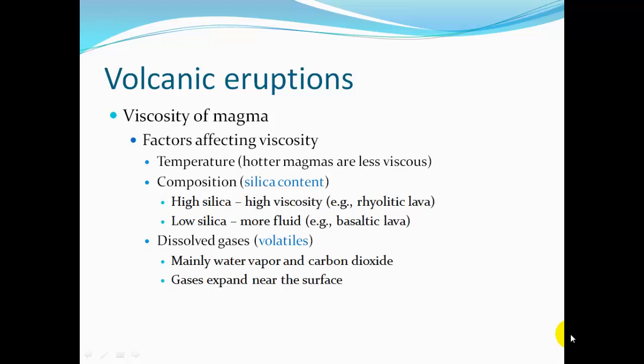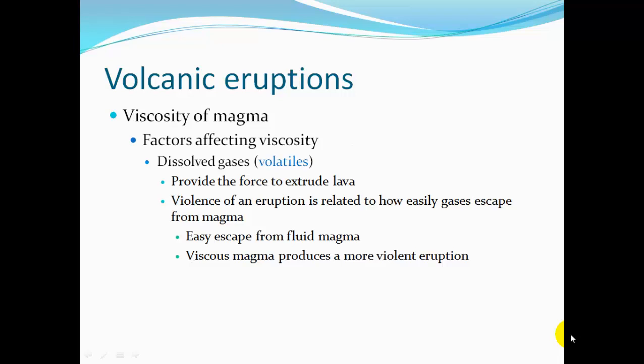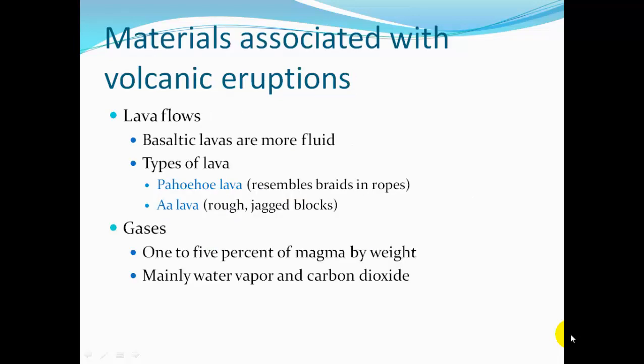Dissolved gases — volatiles — in the magma, mainly water vapor and carbon dioxide, expand near the surface. If they're able to easily escape, then the eruption will be less violent. But if they have a hard time escaping, like in rhyolitic lava, there'll be a more disastrous eruption. Those dissolved gases provide the force to extrude the lava out of the volcano, and the violence of the eruption is related to how easily the gases escape from the magma.